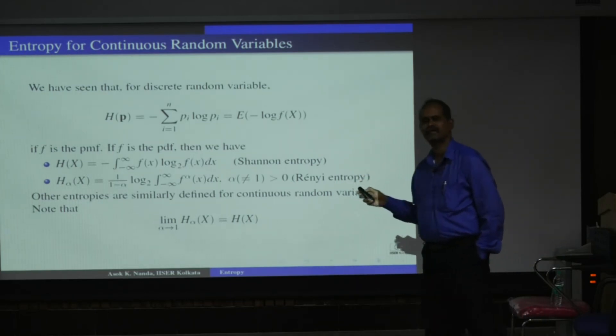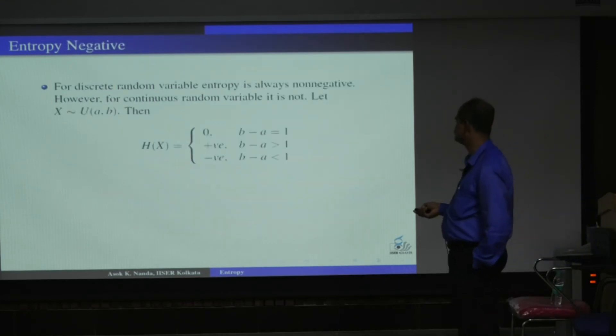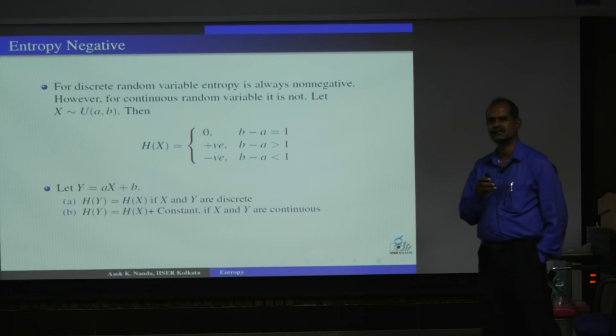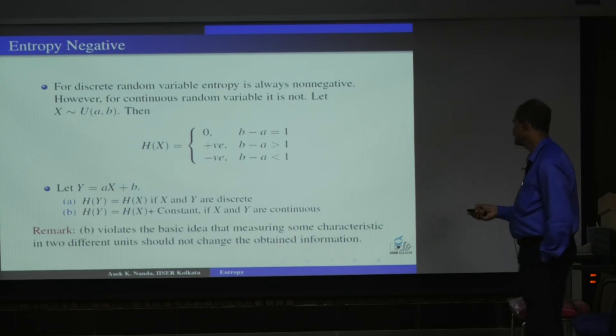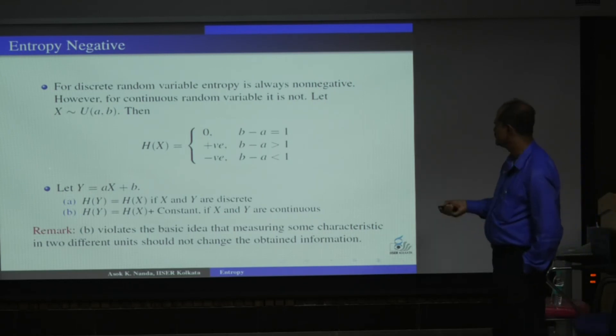When you come to the continuous part of entropy, then simply you remove sum by integration, and your P by your corresponding density. This is the way the different kinds of entropies are developed for continuous random variables. Here the problem is, for continuous random variables, your entropy can be negative. This is another drawback, if you just replace sum by integration and probability mass function by probability density function. Another problem is here, H(Y) should have been H(X), but here we see that H(Y) is H(X) plus some constant, if X and Y are continuous random variables, which should not be, because here it is just a linear transformation. That means, I have something measured in different units, that's why I am getting different entropy, which is not the correct thing. So this is another drawback of Shannon entropy.